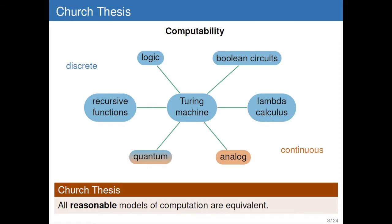We know this is essentially true for all discrete models of computation — all models that look like a computer. A Turing machine, recursive functions, you can come up with logic, Boolean circuits, lambda calculus and rewriting — all of this is equivalent. Where it gets interesting is when you go to quantum computers. It turns out they compute the same thing, although not at the same speed, maybe. And now there are the machines I just presented — we call them analog computers. Are those really equivalent to a Turing machine? Well, it turns out sometimes yes, sometimes no.